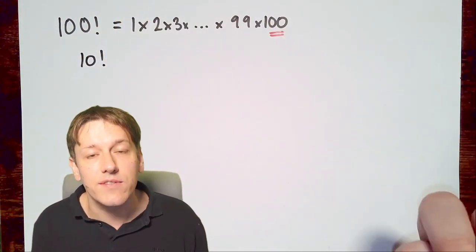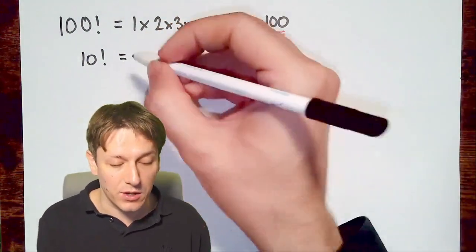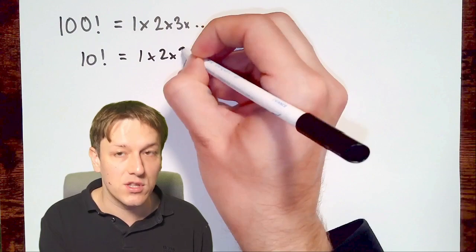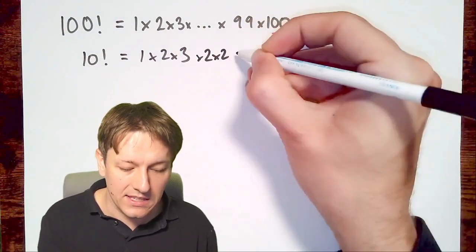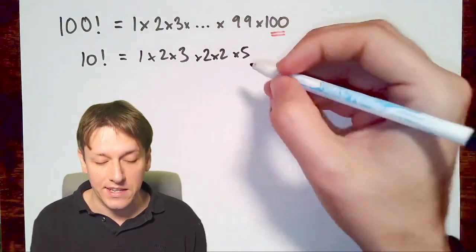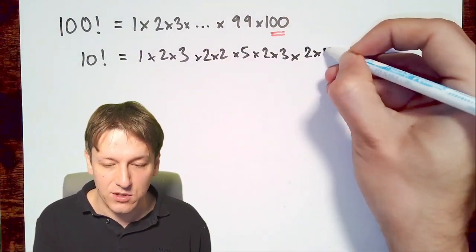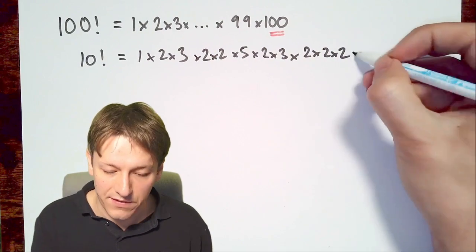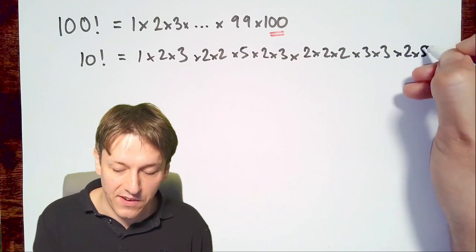But I'm going to write out 10 factorial with its prime factorizations in place. So I'm going to write 1 times 2 times 3, but instead of 4 I'm going to write 2 times 2. And 5 is 5, instead of 6 I'm going to write 2 times 3. For 8 we're going to have 2 times 2 times 2. For 9 that's going to be 3 times 3. And for 10, of course, that's 2 times 5.